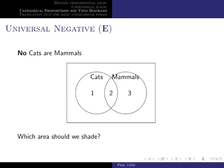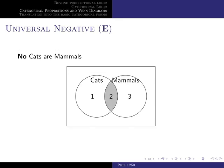Now let's deal with propositions of form E — universal negative ones. In this case, 'No cats are mammals.' Universal negative propositions are also represented by shading areas. The area we shade is the one depicting that the set of things that are both cats and mammals is empty, which is area two — the overlapping region. We shade area two to express that the intersection of both sets is empty. In general, to express a universal negative proposition, we shade area two, the intersection.